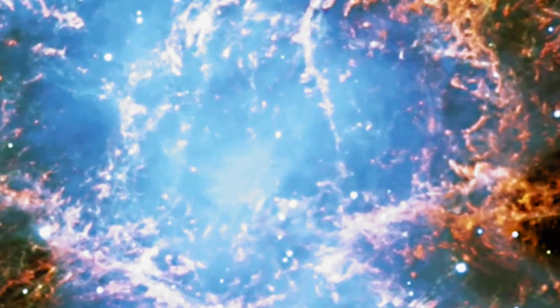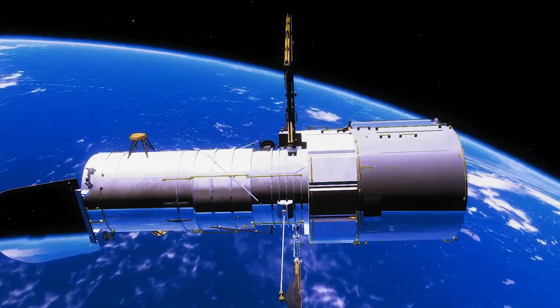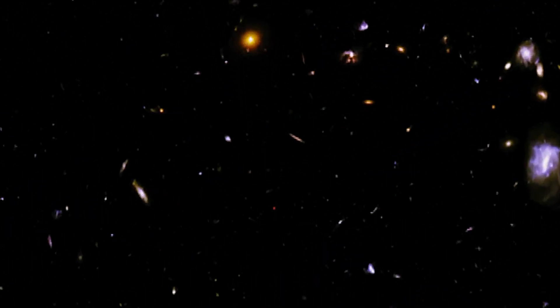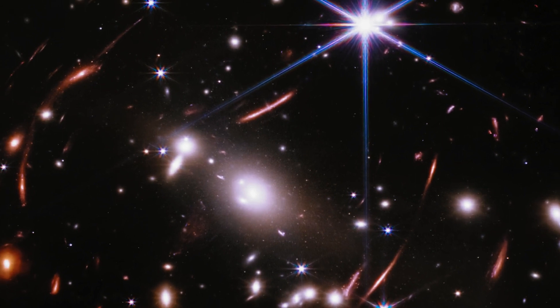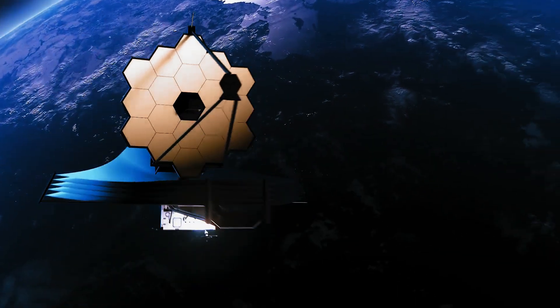Dark matter doesn't interact with light, meaning scientists know it isn't the same as everyday matter made up of protons and neutrons. Its presence can currently only be inferred by its gravitational interactions, which literally prevent the stars and planets of galaxies from flying apart.